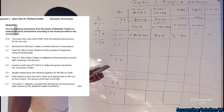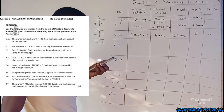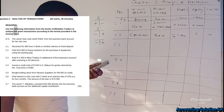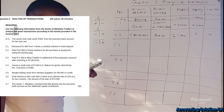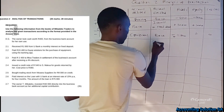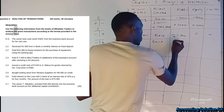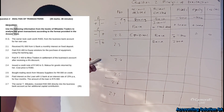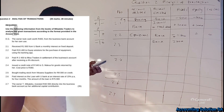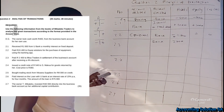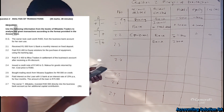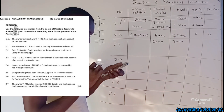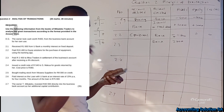Transaction 2.3: paid R2,400 to Mecar Traders in full settlement of the business account after receiving a 4% discount. We paid R2,400 to our creditors. Bank money goes out — R2,400. But we received a 4% discount, so we need to do a calculation to find the original amount owed.